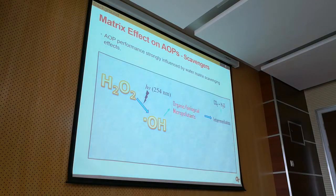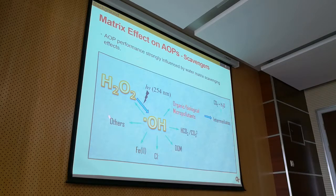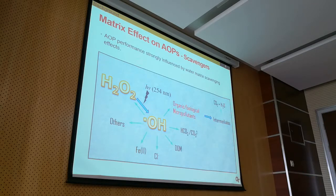When we apply AOP in real water, the water definitely contains not only the contaminants we want to treat but also many other things. For example, if we apply UV-H2O2 to produce OH radical, many other things present in water can also react with OH radical. We call these scavengers. These scavengers react with OH radical and overall reduce its concentration, which affects the performance of the AOP in degrading the target contaminants.